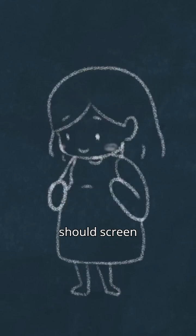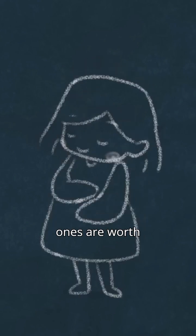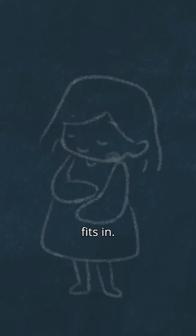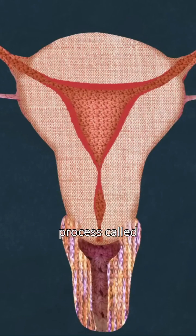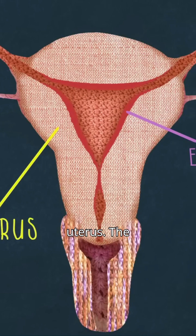So it makes sense that the body should screen embryos carefully to find out which ones are worth the challenge. This is where menstruation fits in. Pregnancy starts with a process called implantation, where the embryo embeds itself in the endometrium that lines the uterus. The endometrium evolved to make implantation difficult, so that only the healthy embryos could survive.